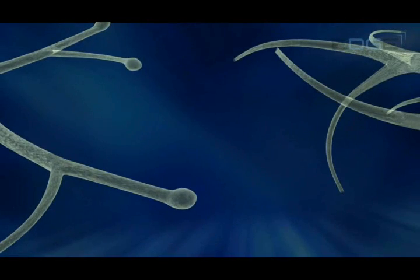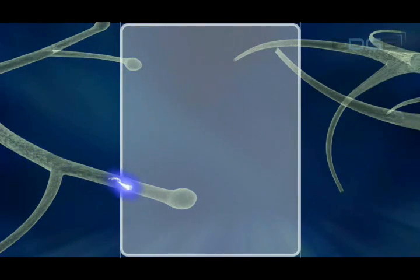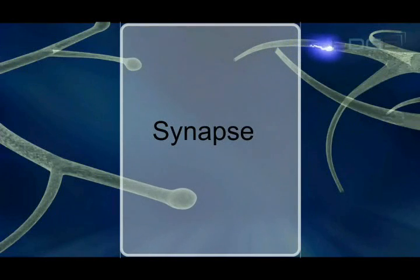At the nerve ending, the electrical impulse sets off a release of a chemical. This chemical passes through the gap or synapse and generates an electrical impulse in the dendrites of the next neuron.